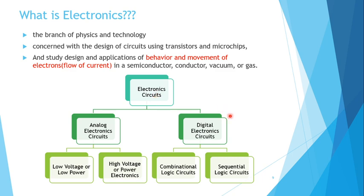Coming to the next part — digital electronics — digital electronic circuits are classified into combinational logic circuits and sequential logic circuits, which is what we have in our syllabus. Logic gates form the base of any digital circuit and are covered in chapter two, followed by combinational logic in chapter three and sequential logic circuits in chapter four.